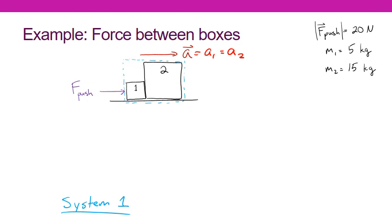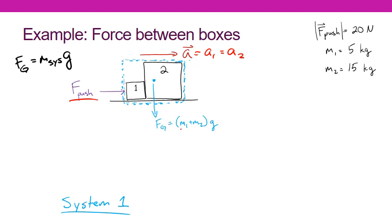I'll begin by finding the acceleration of my two-box system, defining my system to be around both boxes. As I look at the forces, there is the force of my push. There's also the force of gravity, defined as the mass of my system times the acceleration due to gravity. My system has two masses: box 1 at 5 kilograms and box 2 at 15 kilograms, so the total mass is 20 kilograms. There's also a normal force that prevents the boxes from sliding through the floor.